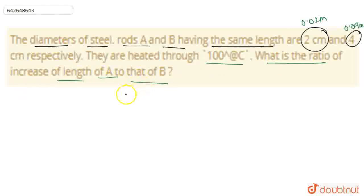We need to find the ratio. We will use this formula in terms of volume: V is equal to V0 into 1 plus gamma delta T.